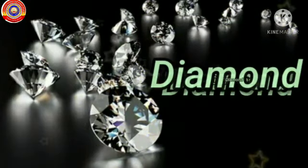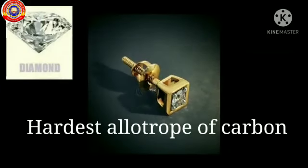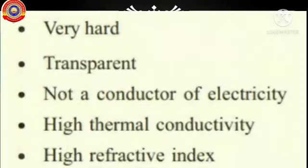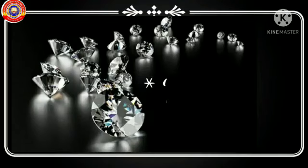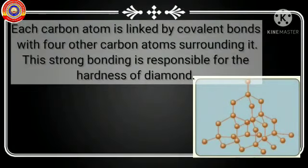Now let us learn about the crystalline allotrope diamond. Diamond is the hardest allotrope of carbon. Let's analyze its characteristics one by one. Number one: diamond is very hard. If you analyze the structure of diamond, each carbon atom is linked by covalent bonds with four other carbon atoms surrounding it. This strong bonding is responsible for the hardness of diamond.